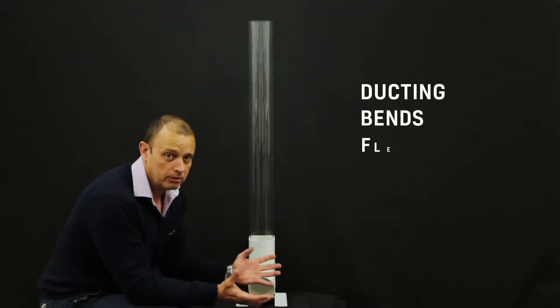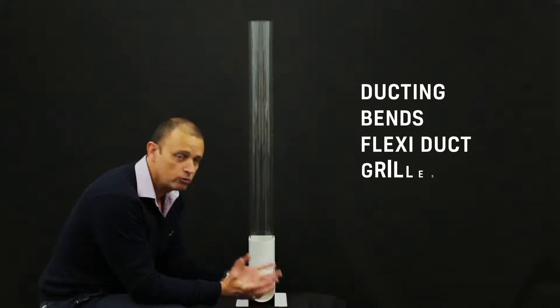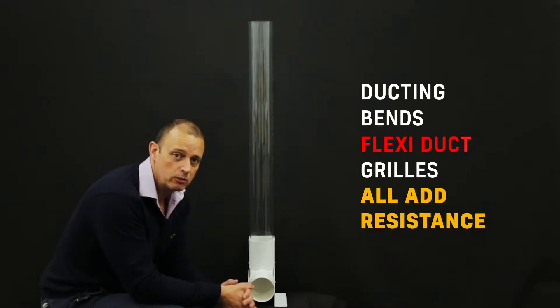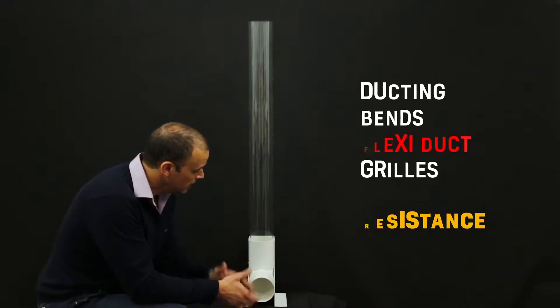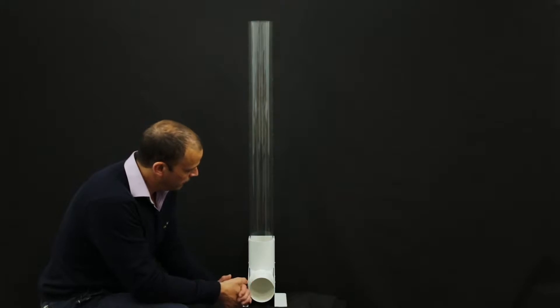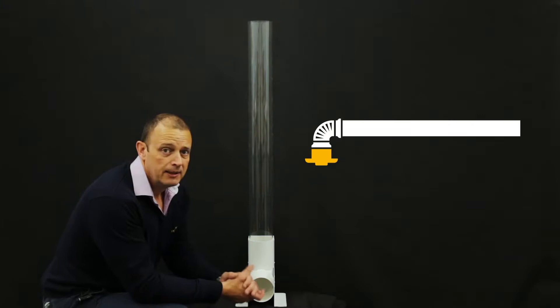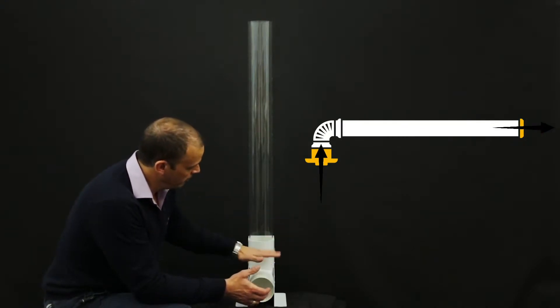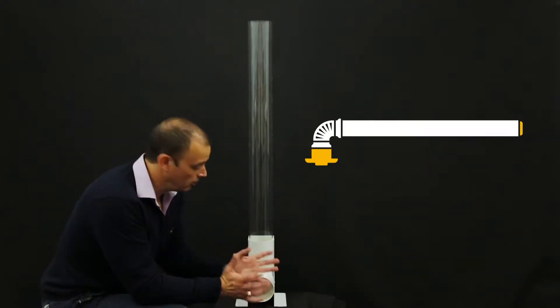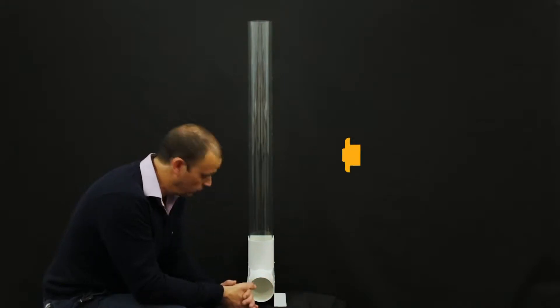Flexible ducting is the worst because it's highly resistive. But this is showing you maybe a length of rigid ducting, a 90-degree bend, and then some resistance that might be from a grill. So this could be a ceiling-mounted fan with a 90-degree bend on the back and then going to outside, or it could be stuck through the wall with a bit of ducting on it and then a grill.